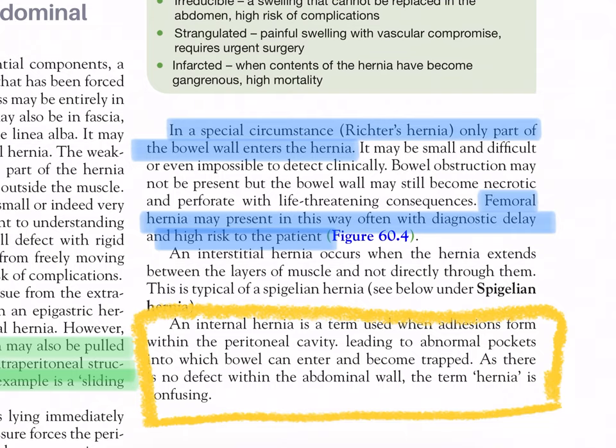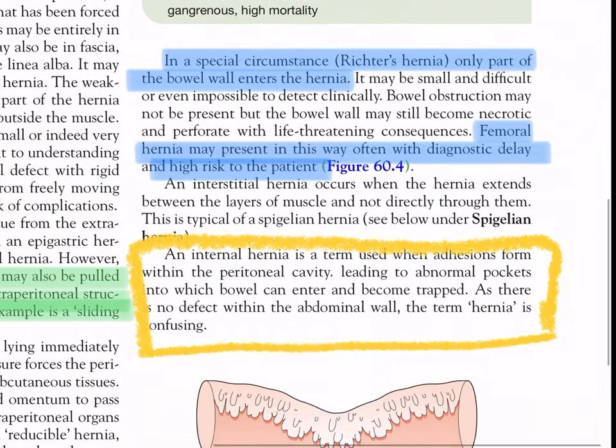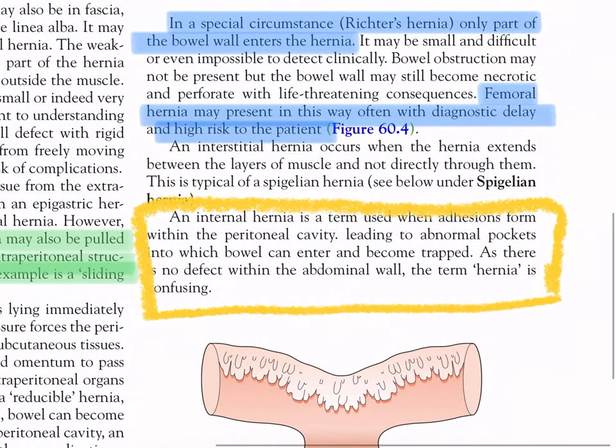Femoral hernia may present as a Richter's hernia, often with diagnostic delay and high risk to the patient. An interstitial hernia occurs when the hernia extends between the layers of muscle and not directly through them — typical of a Spigelian hernia. An internal hernia is a term used when adhesions form within the peritoneal cavity leading to abnormal pockets into which bowel can enter and become trapped; as there is no defect within the abdominal wall, the term hernia is confusing.